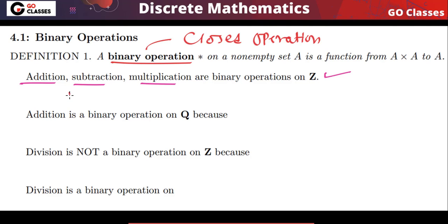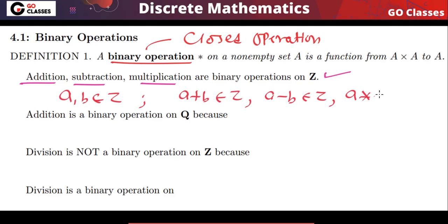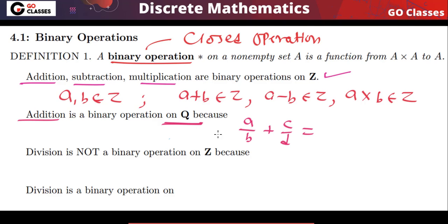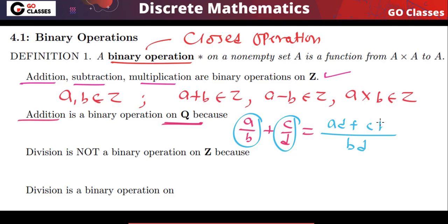If you take any two integers a and b, their addition is also an integer, their subtraction is also an integer, and their multiplication is also an integer. Addition is also a binary operation on the set of rational numbers Q, because if you take any two rational numbers like a/b and c/d, their sum is also a rational number.